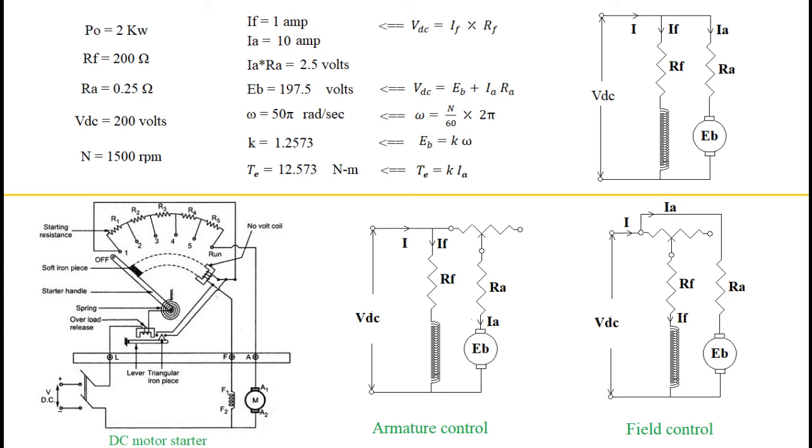Now let's consider armature control of the DC shunt motor. As shown in the slide, resistance is included in the armature circuit. This additional resistance reduces armature current and available torque. Since field circuit voltage remains constant, the magnetic field provided by the poles remains the same.